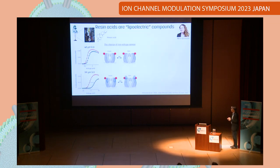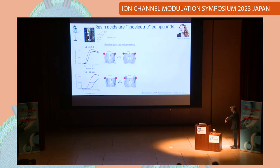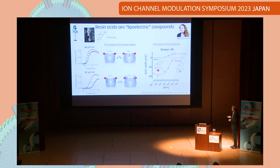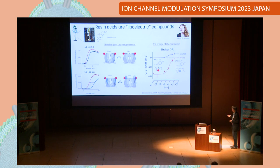Instead, we searched the literature and found compounds from tree resin. These activate the wild-type channel and, more importantly, have a huge effect on the super channel. We also tested by changing the charge of the compounds, and the results fit extremely well with what we call the lipoelectric effect: negatively charged compounds shift the GV curve in the negative direction, and positively charged compounds shift it in the positive direction.